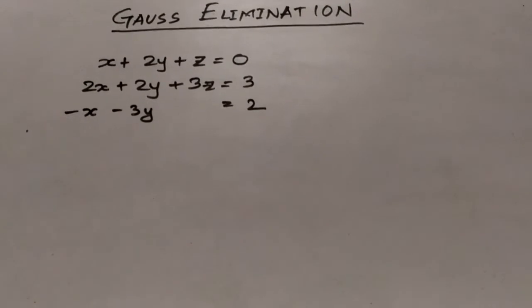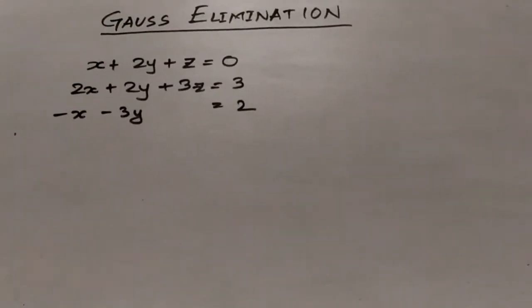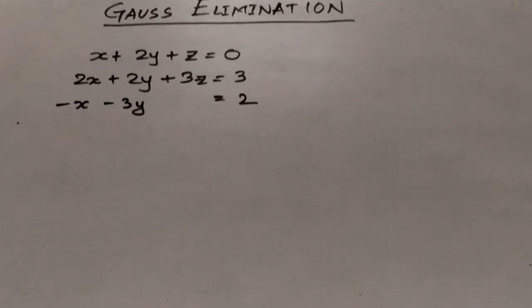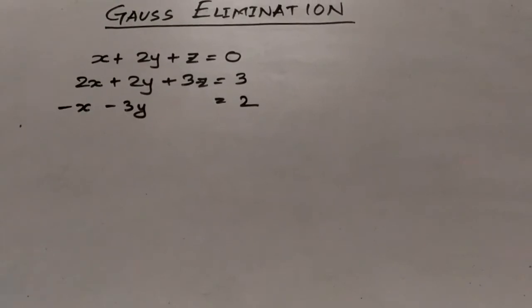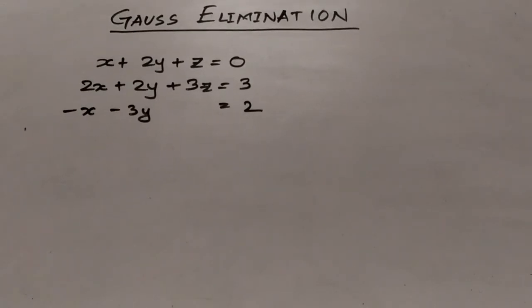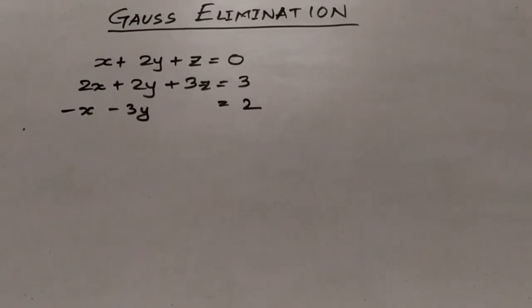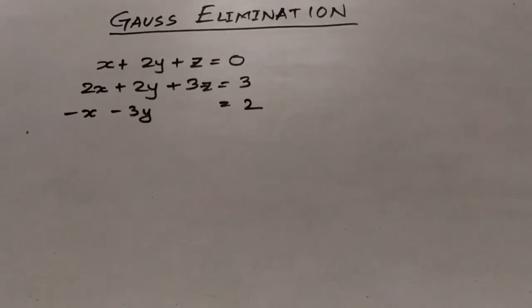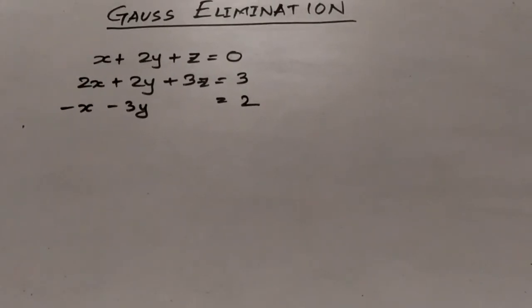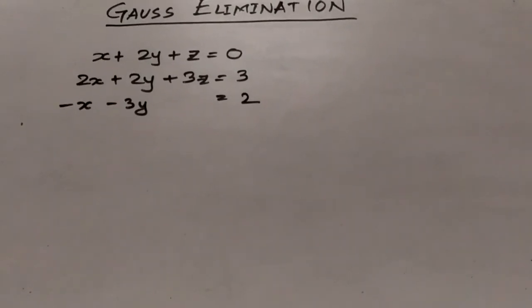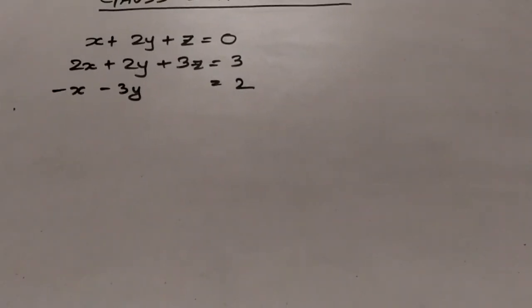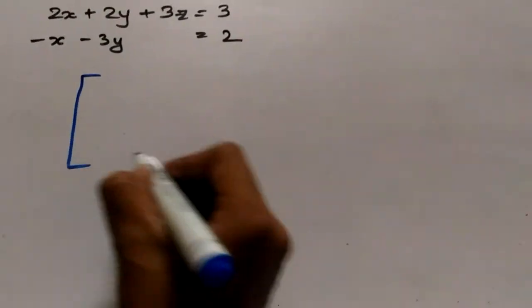Now, to understand the Gauss elimination method we need to take an example. The example here has three equations: the first one is x plus 2y plus z equals 0, then 2x plus 2y plus 3z equals 3, and the last one is minus x minus 3y equals 2. The first step of Gauss elimination is to form a matrix using the coefficients of the variables and the constant terms, so let us form the matrix.